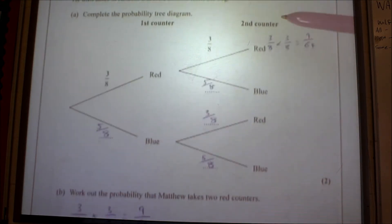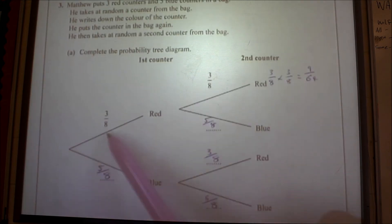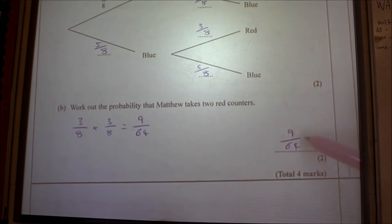Work out the probability that Matthew takes two red counters. So you want to go red, red. Three eighths times three eighths is nine over 64, and I don't think you can simplify that, so nine over 64.